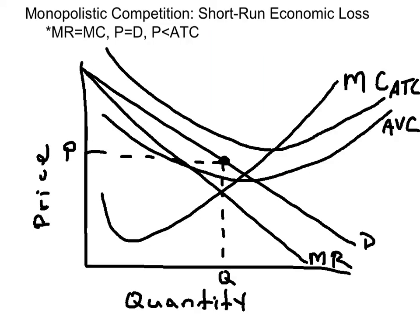Remember, in monopolistic competition we have many firms that are selling similar products. These products are not identical though, so the firm itself does have some control over the price. It has more control over price than perfect competition, but less control over the price than, say, a monopoly.